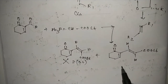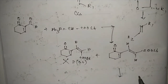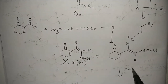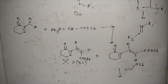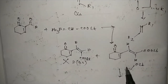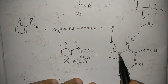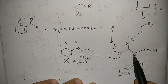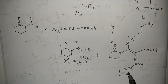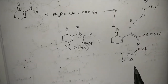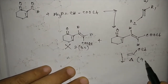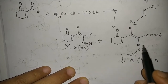Now this product A (the trans-alkene) is treated with vinyl ethyl ether. We can see here that the trans-alkene is a 4π electronic system — that is, a diene — and vinyl ethyl ether is the dienophile. So this will be a Diels-Alder reaction, a 4+2 π cycloaddition.